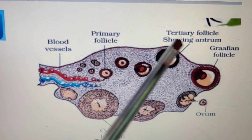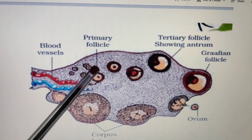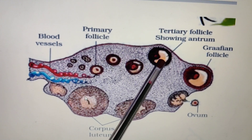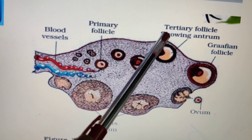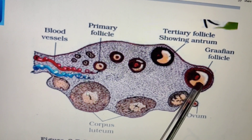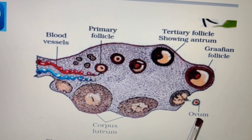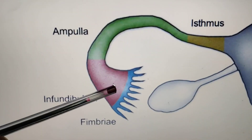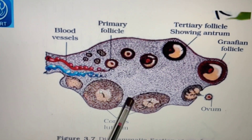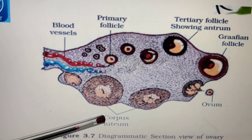Inside the ovary, many follicles (oogonial follicles) are present. When they are small they are termed primary follicles; when they grow in size and a large cavity is formed inside them they are termed secondary follicles; then tertiary follicles; and when they again grow in size forming a large cavity they are termed Graafian follicles. After this, when the follicle ruptures, the secondary oocyte goes from here and is collected by the fimbriae of the fallopian tube. The remaining left part is termed the corpus luteum.